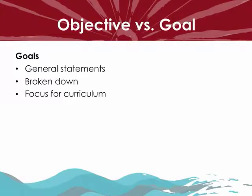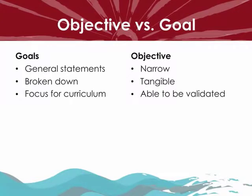We defined objectives, but let's explain the difference between an objective and a goal. A goal is usually a general statement of desired instructional outcomes that can often be broken down into more specific behaviors. Goals are typically used for curriculum development as they are general and a bit abstract. An objective, on the other hand, is more narrow, tangible, and able to be validated, and works well at a course level.